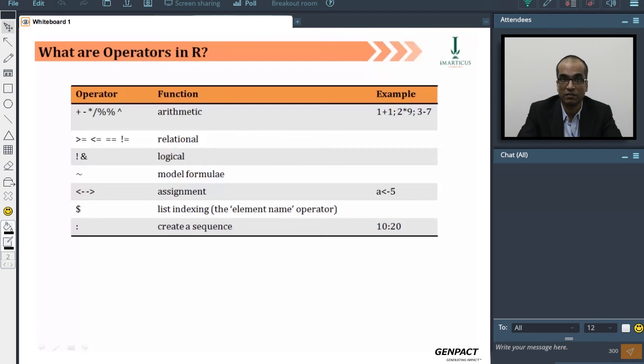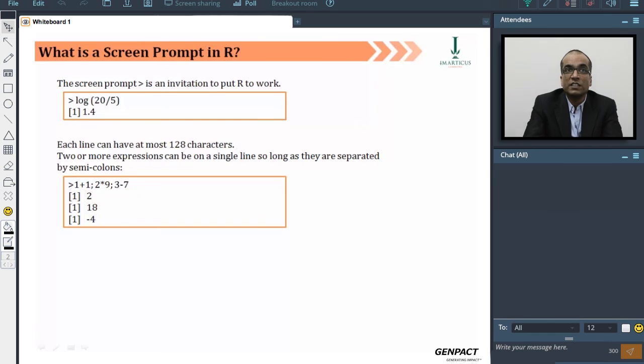10 colon 20 says create a sequence of numbers from 10 to 20. There will be 11 numbers in this sequence, including 10 and 20. So that would be 10, 11, 12 till 20—that is 11 numbers.